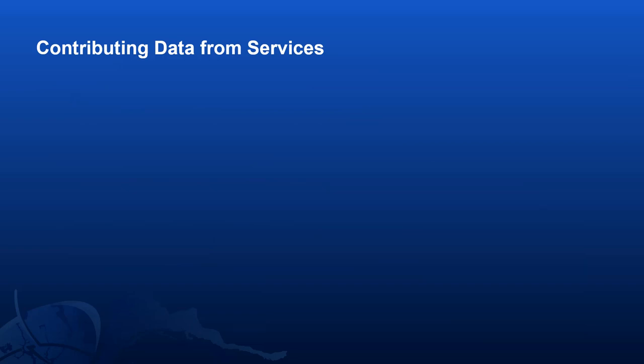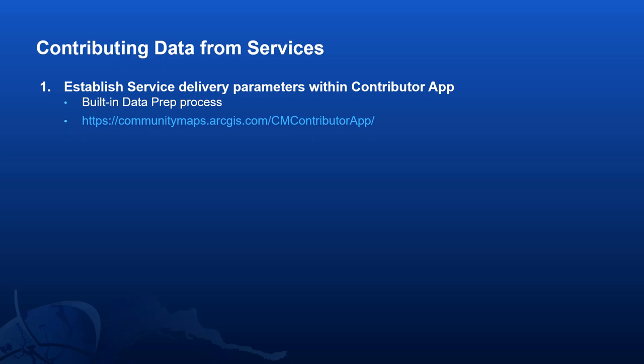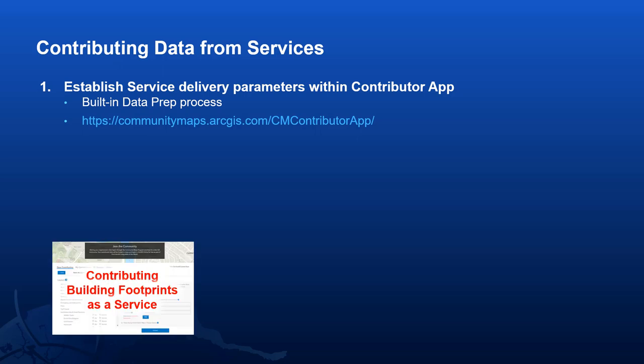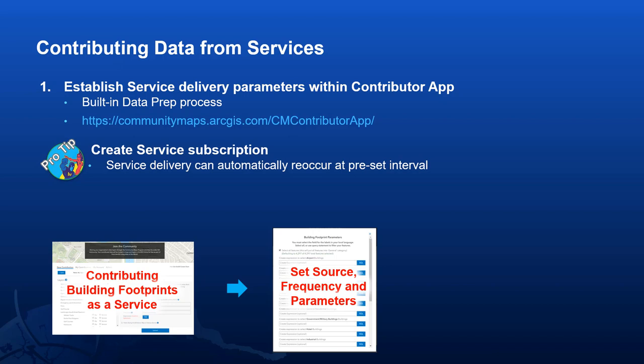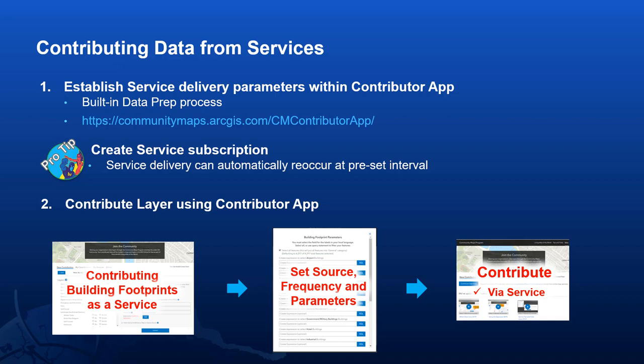If you already have your data in the form of a service, you can contribute directly from that service by establishing service delivery parameters within the contributor app, including source, frequency, and other parameters. You can also create a service subscription, which automatically sets an interval for contributing. For example, if you'd like to contribute your building footprints every six months, you can set that frequency and Esri will automatically pull that data from your service. The program will let you know before that happens in case there are any changes you'd like to make. The final step is to contribute that layer using the contributor app.